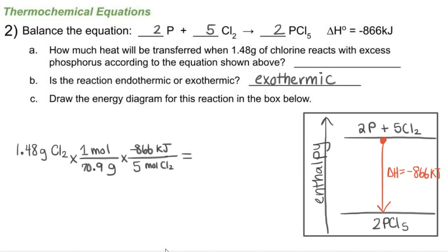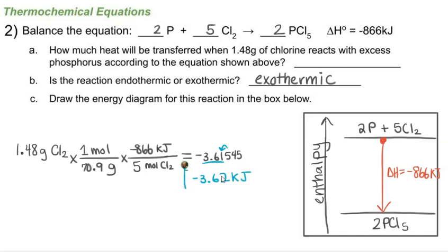Solving: 1.48 divided by 70.9 times −866 divided by 5 gives −3.61545. Rounding to three significant figures, since the 5 rounds the 1 up, my final answer is −3.62 kilojoules.